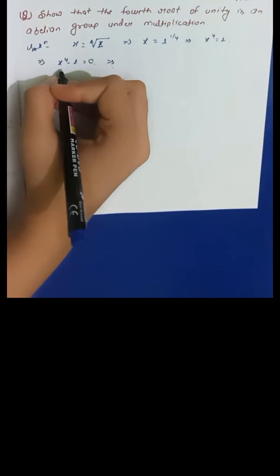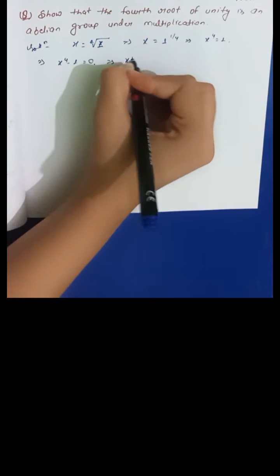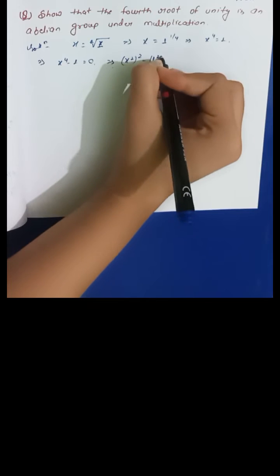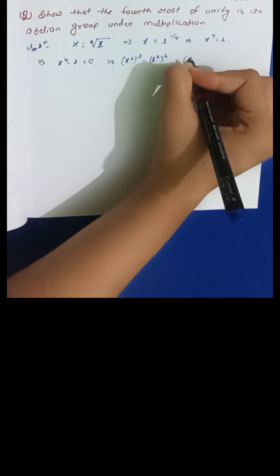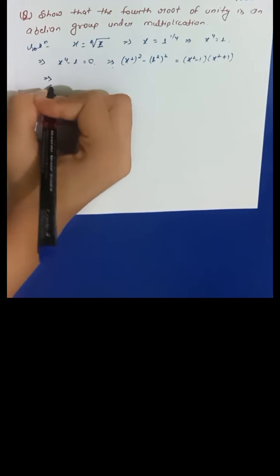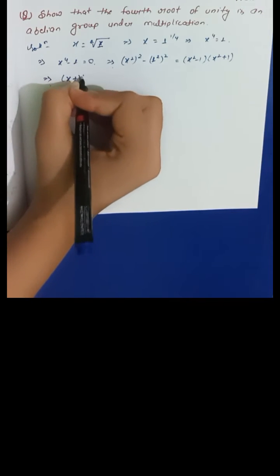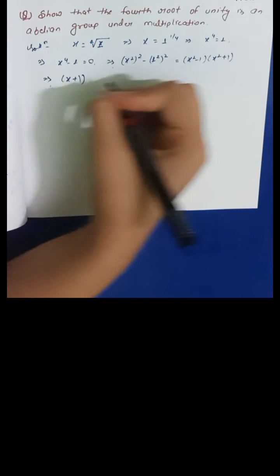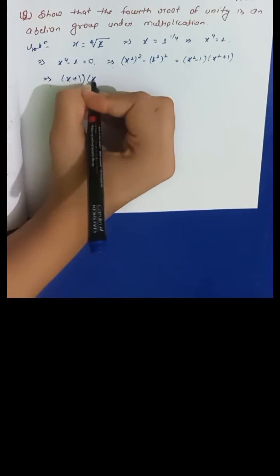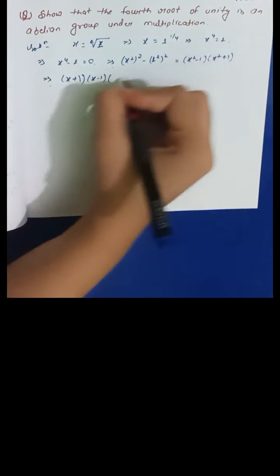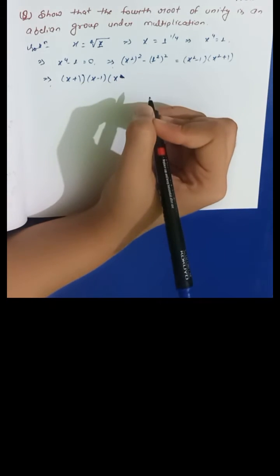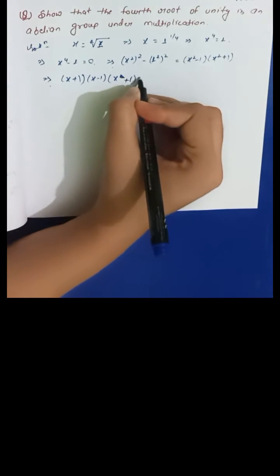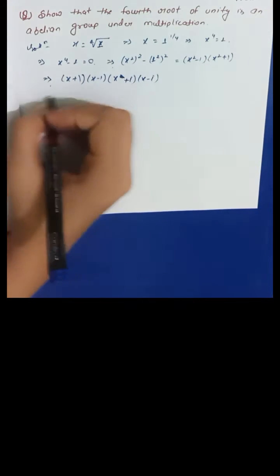We can factor this using the difference of squares: x⁴ - 1 = (x² - 1)(x² + 1). Breaking further: (x + 1)(x - 1)(x² + 1), and x² + 1 factors into (x + iota)(x - iota).